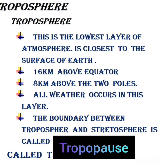The first layer is the troposphere. This is the lowest layer of the atmosphere, which is closest to the surface of the Earth. The extent of this layer is about 16 kilometers above the equator but only about 8 kilometers above the two poles.